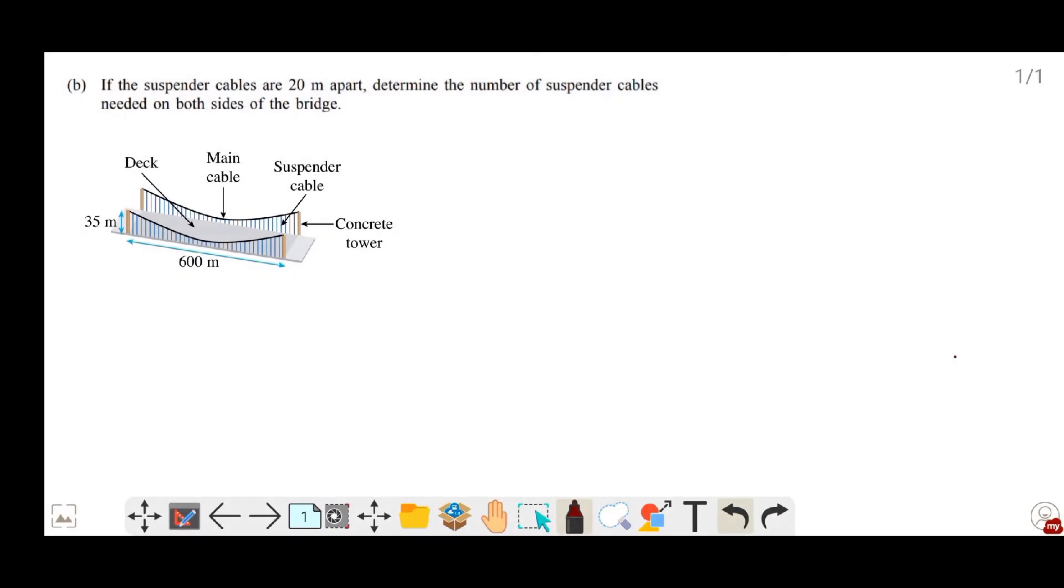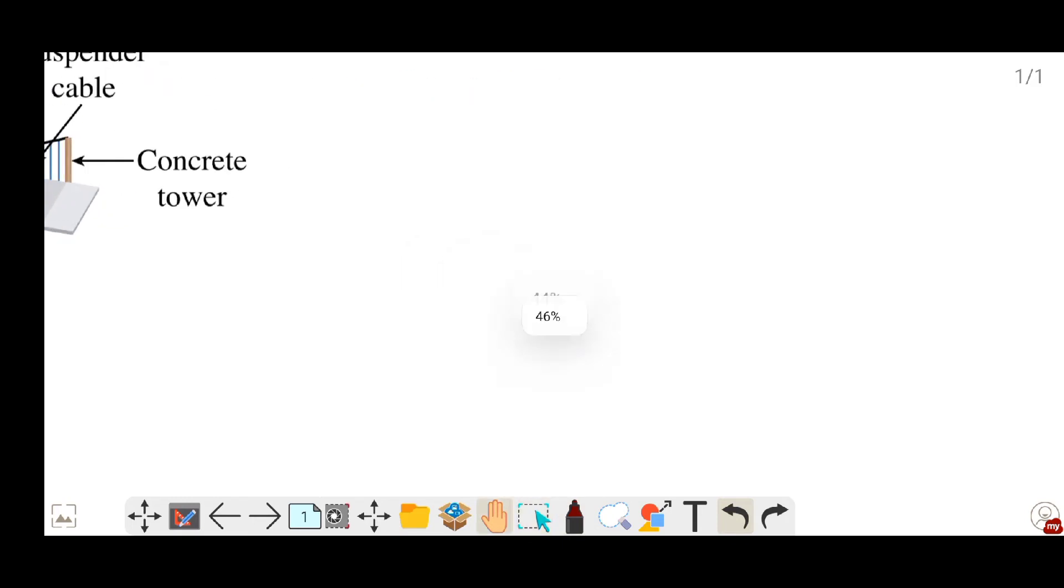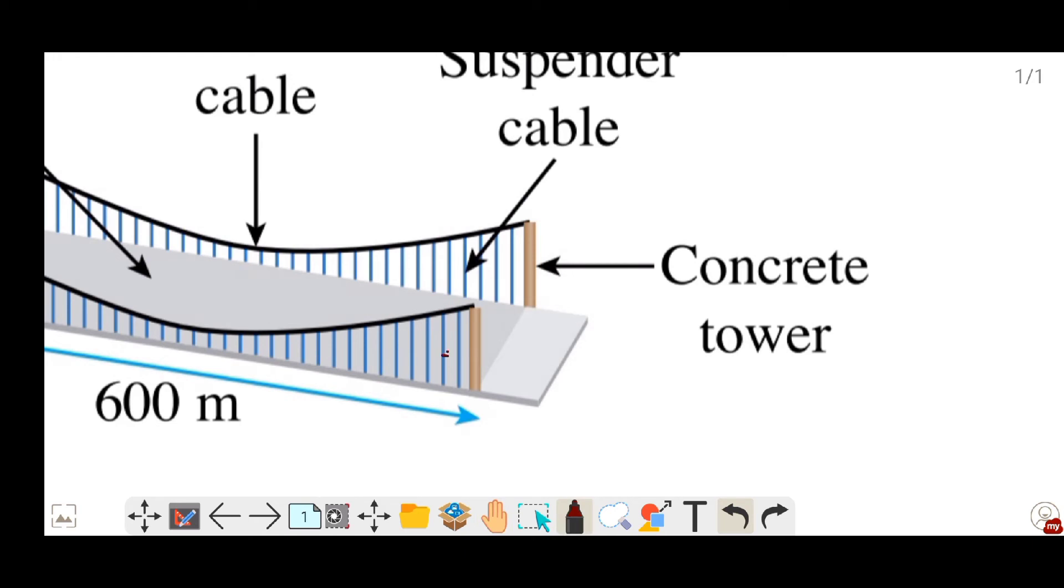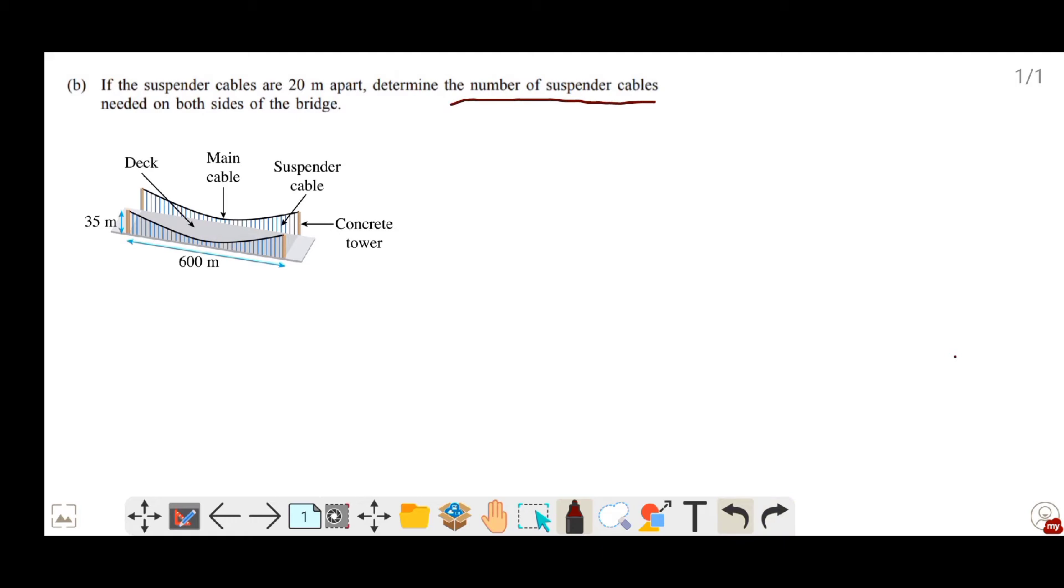If the suspended cables are 20 meters apart, determine the number of suspended cables needed on both sides of the bridge. So what it means by suspended cables are 20 meters apart is that the gap between the suspended cable is 20 meters. So now to determine the number of suspended cables needed on both sides of the bridge, we just divide the length of the bridge, which is 600 divided by 20, and then we minus 1.